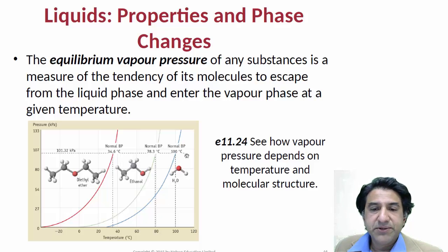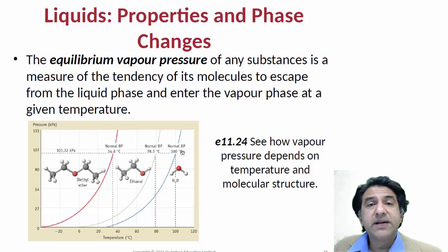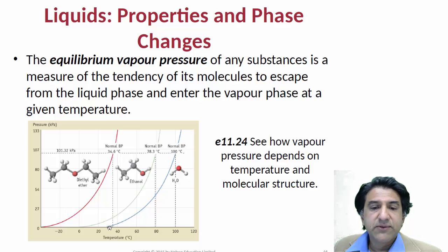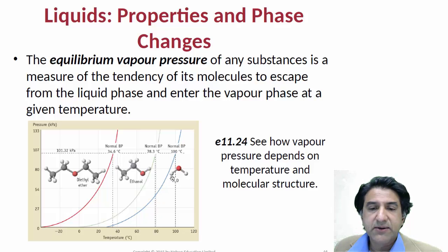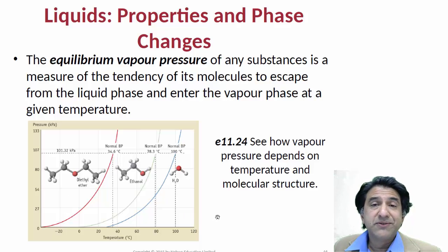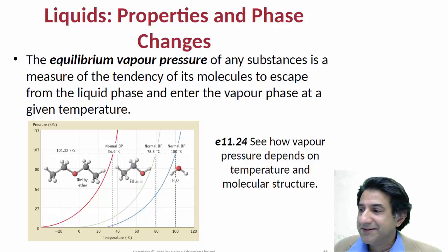So the boiling temperature tells us something about the intermolecular interactions — the strength of them in the liquid phase. Also, the vapor pressure curves tell us equally the same information, in more detail, because they allow us to predict the boiling temperature at any pressure. I hope you understood that. See you later.